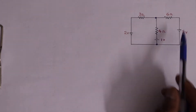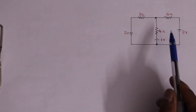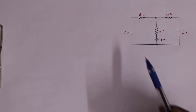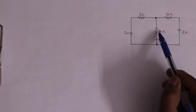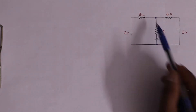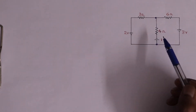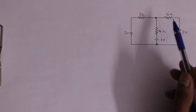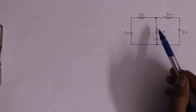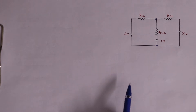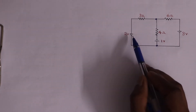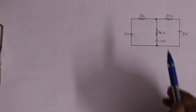We have current flowing in a circuit and flowing in a separate branch. There is a voltage drop in a particular area, and the voltage drop is consumed by that element. We have done a nodal analysis. In that video, we analyzed the current source.